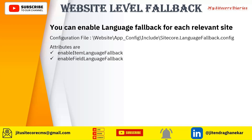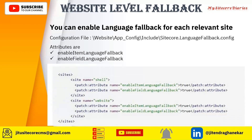It will enable the field level language fallback for the selected website. That can be done by this patch configuration where you can update the two attributes — enable item language fallback and enable field language fallback — setting them to true. That will make website level fallback enabled.